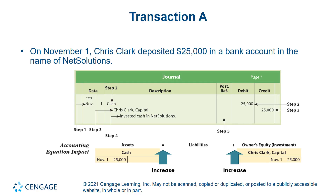The process of recording a transaction in a journal is called journalizing, and the entry in this journal is called a journal entry. Let's examine this journal entry. There are two accounts: cash and capital. Cash is increased, and it's an asset. An increase in an asset is recorded on the debit side.